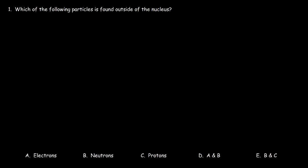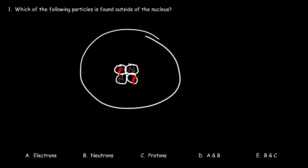Let's talk about the structure of the atom. In the center of the atom, known as the nucleus, you have the protons and the neutrons. Outside of the nucleus are the electrons — the electrons are orbiting the nucleus, forming the electron cloud. The nucleus consists of the protons and the neutrons.